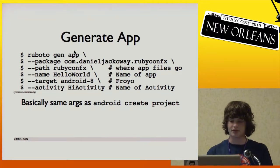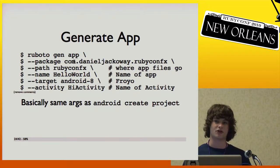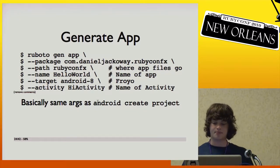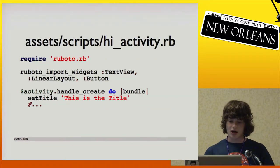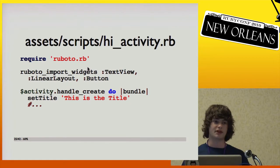Then you generate an app. The main important thing is the Java package name, which is how Android differentiates between apps — every app you write needs its own unique package. You won't even be able to submit it to the market if there's already one with that package, and it would overwrite an existing installation on an emulator or phone. This is basically a drop-in replacement for Android Create Project, which is how you'd generate a normal Android app. It gives you all the normal files because it actually calls Android Create Project behind the scenes, plus it throws in the RubotoActivity.java files and a few other things.